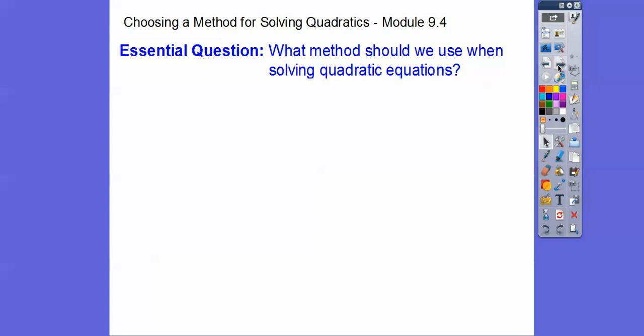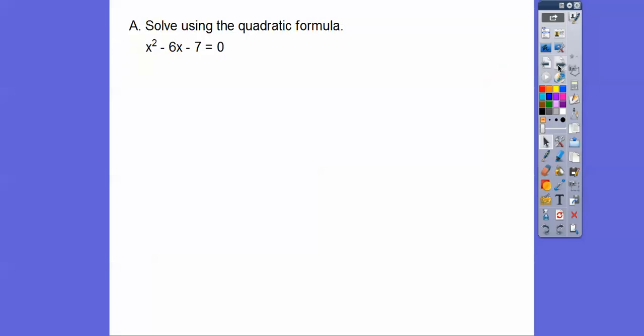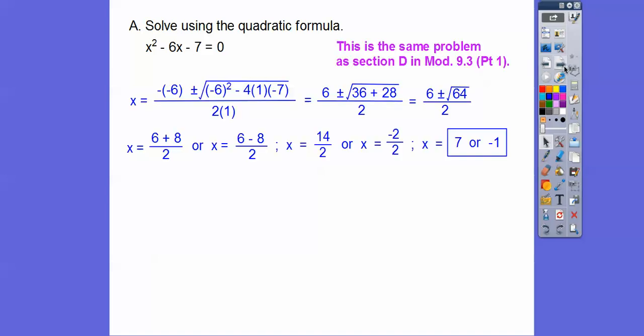So what method should we use when we're solving quadratic equations? So here, this says solve using the quadratic formula. So A is 1, B is negative 6, and C is negative 7. So good old quadratic formula. This is the same problem that we did in Module 9.3. This is Part 1. So this was, I think, number 1 in Section D. So there it is with the quadratic formula.